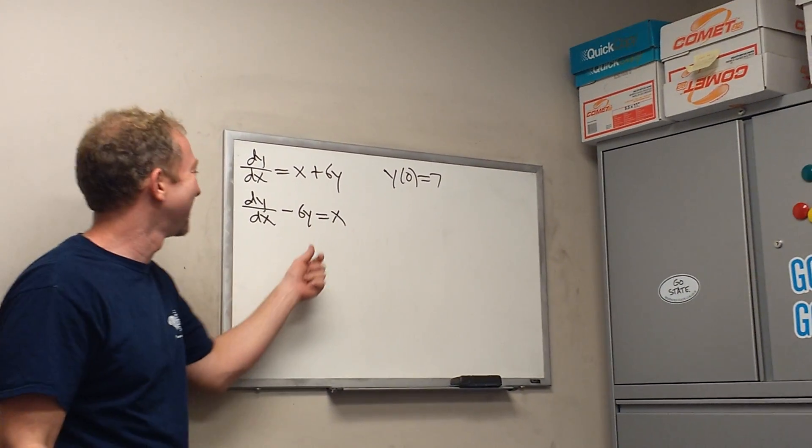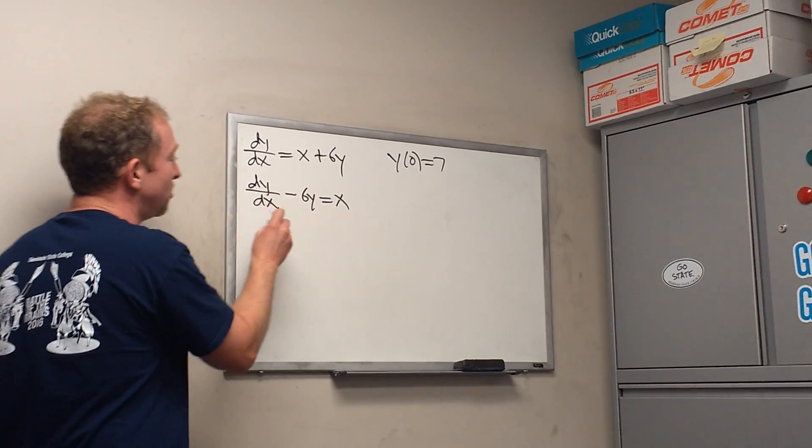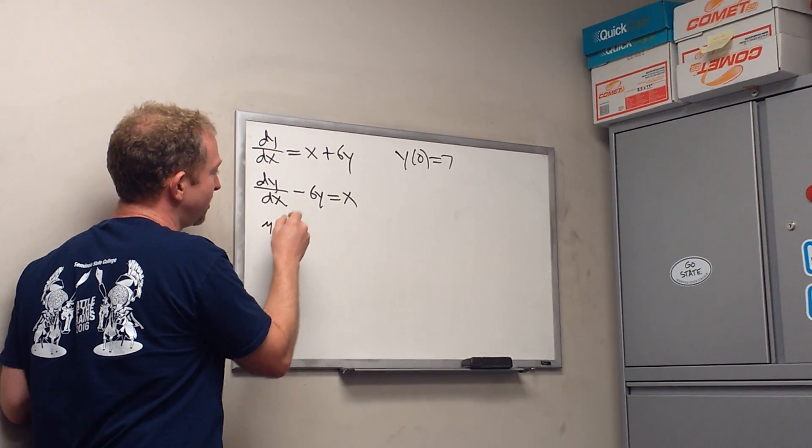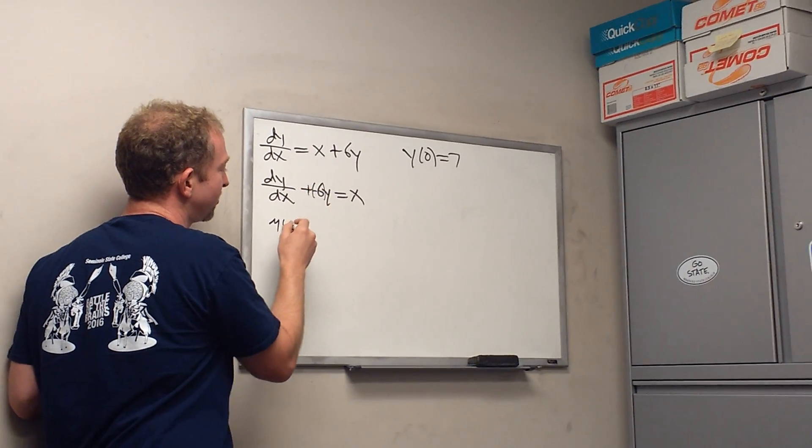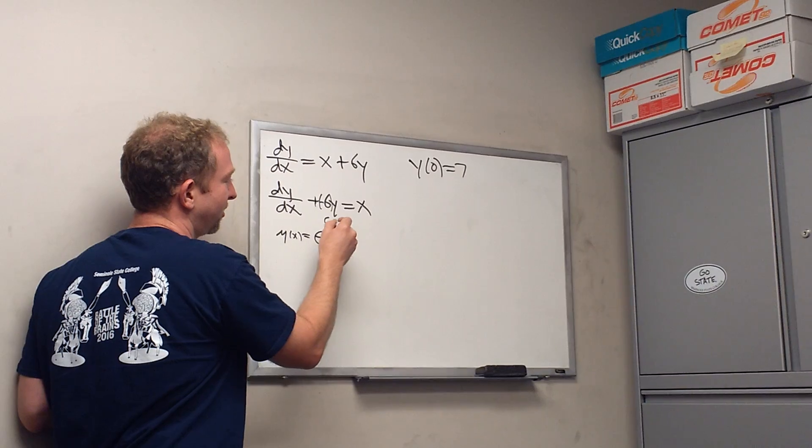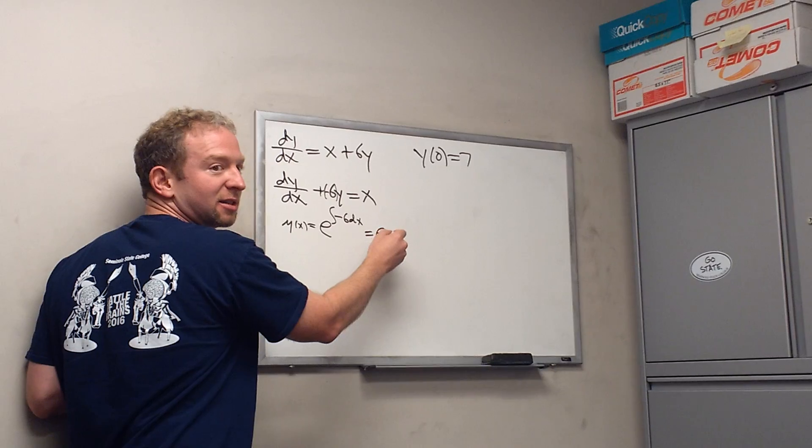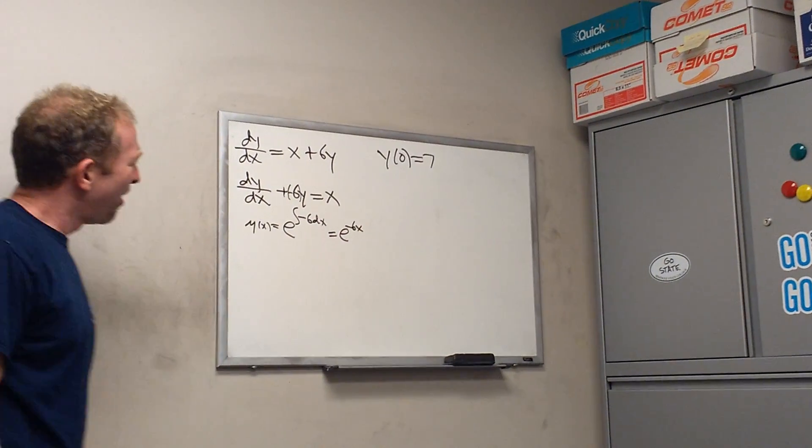You'll be famous for it. Yeah! Okay, so now the mu, there's a negative here. So you've got to be really careful because it's really plus negative 6, right? So mu of x is e to the integral of negative 6 dx. Yes, and that's easy, right? Make sense, Sasha? Still with me? E to the negative 6x.